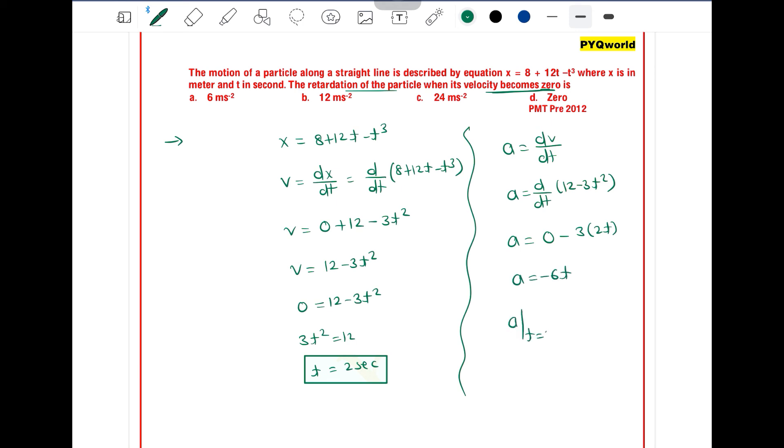So acceleration of the particle at t = 2 is equal to -6 × 2 = -12 m/s². Since the question asks for retardation, the answer is +12 m/s². Option B is correct.